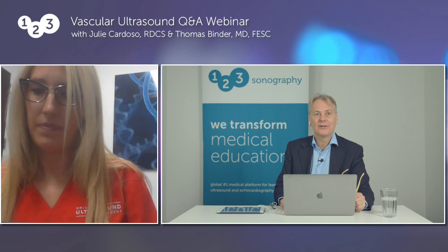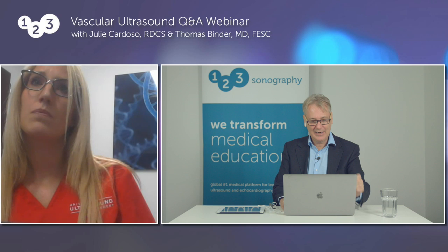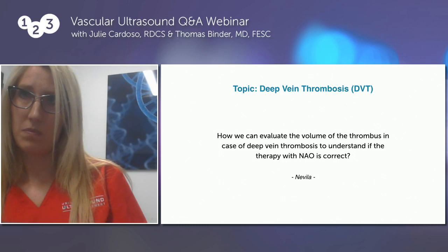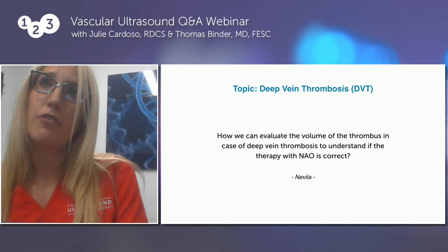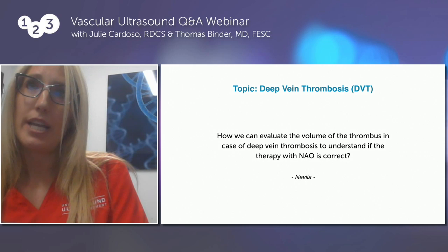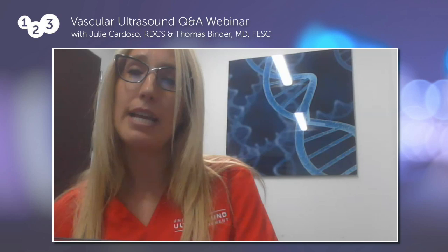Most questions really center on DVT, which is a very important part of clinical routine. A question from Nevila: how can we evaluate the volume of the thrombus in DVT to understand if therapy with NOAC is correct? Regarding NOAC therapy, we usually surveil these patients — once they have an event and are placed on anticoagulation, surveillance is done one to two weeks to see if the thrombus progresses or stabilizes, and then at three to six months.